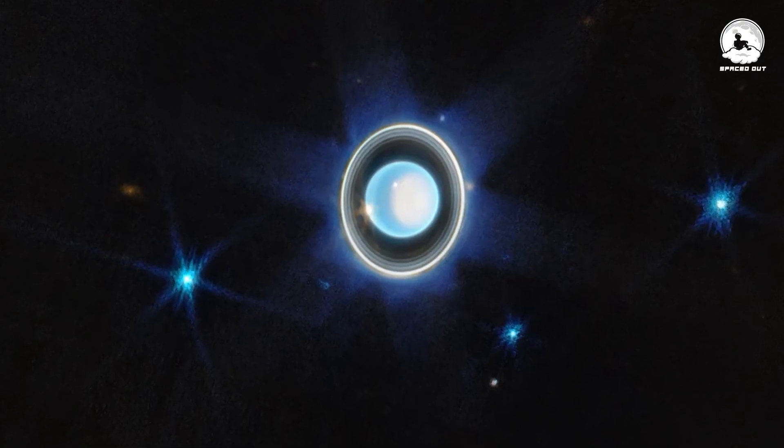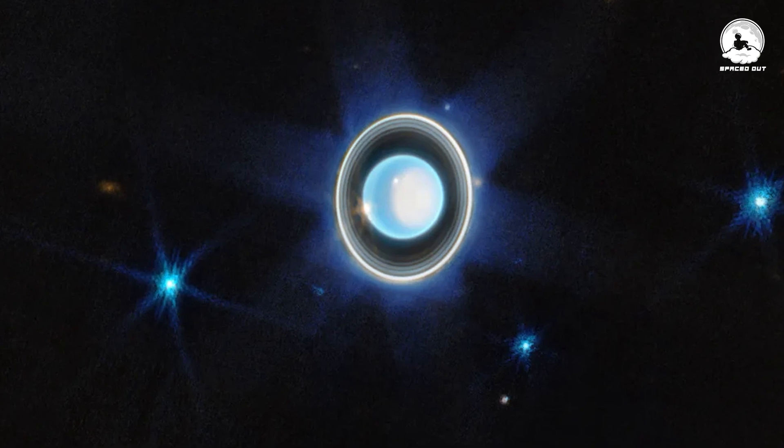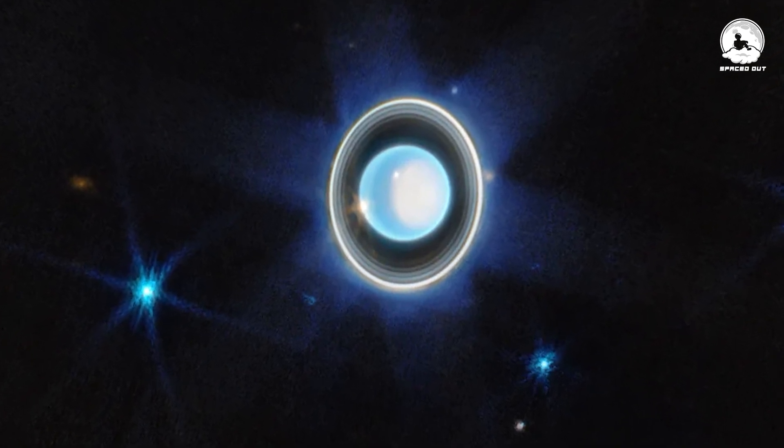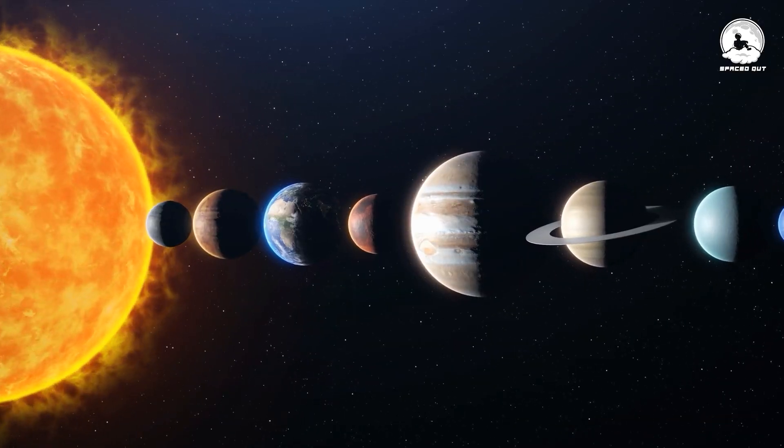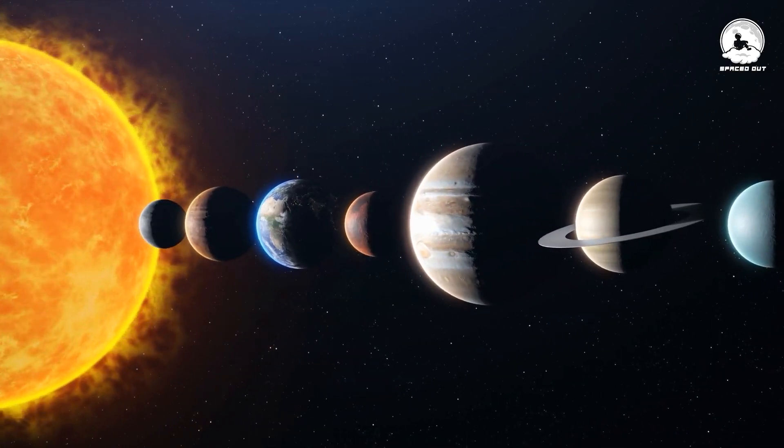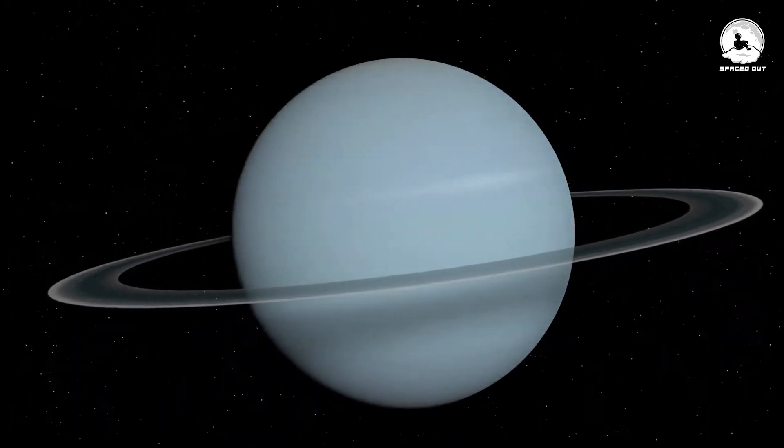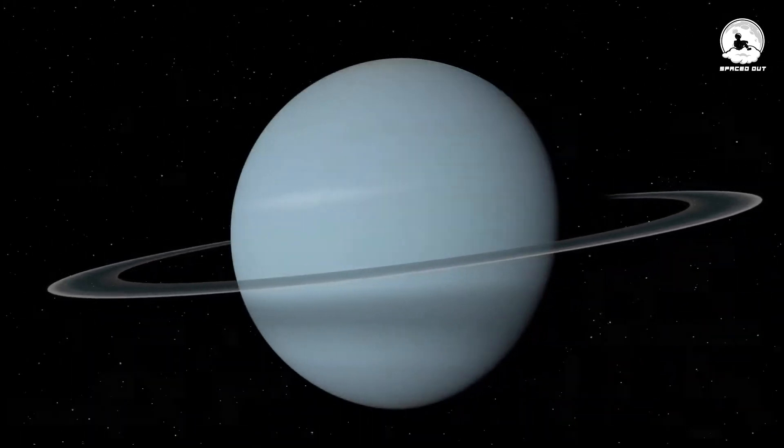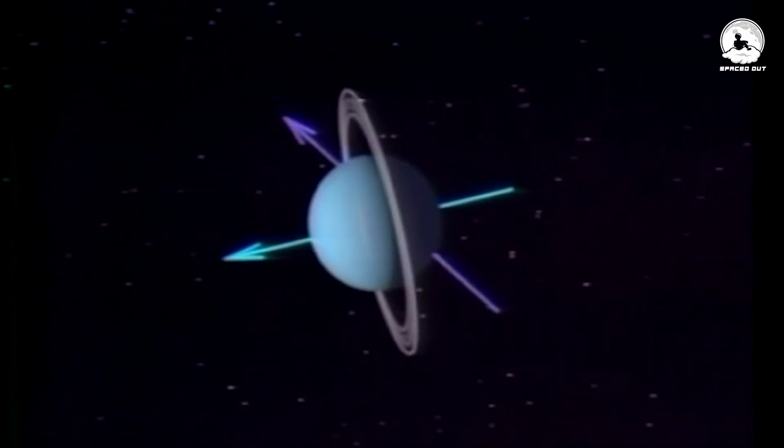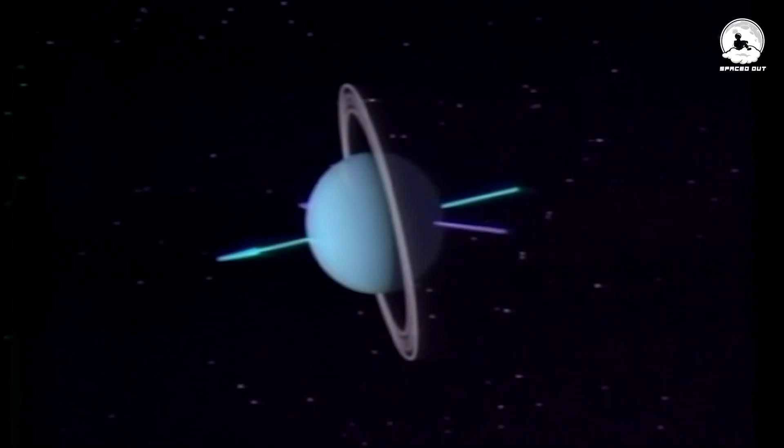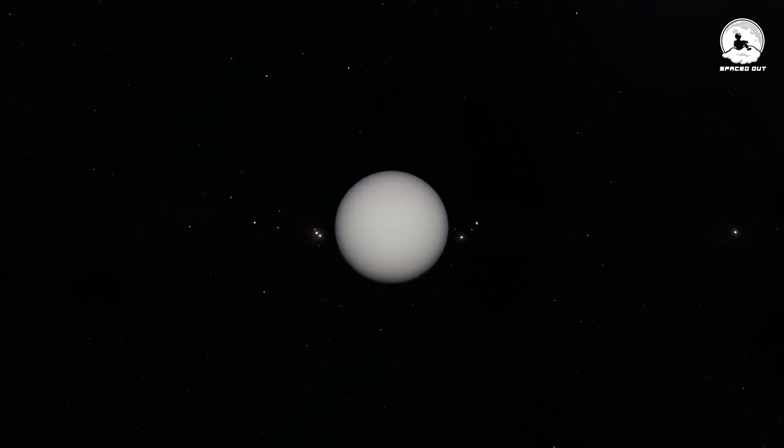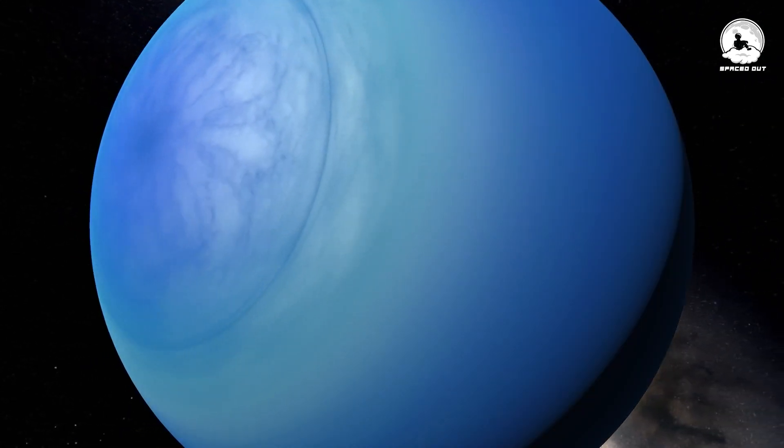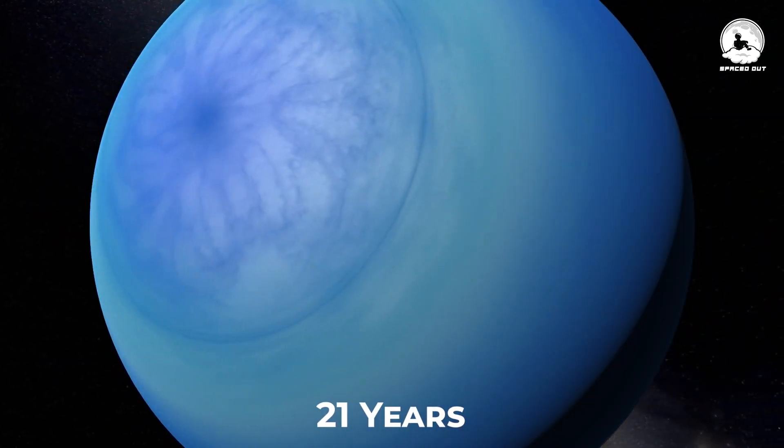These distinct features captured in the image offer valuable insights into Uranus's structure, composition, weather and seasons, setting it apart from the other planets in our solar system. Uranus stands out for its uniqueness, primarily due to its peculiar rotation. It spins on its side with a dramatic axial tilt of 98 degrees. This means its poles are nearly parallel to its orbit, leading to extreme seasons, each lasting a whopping 21 years.